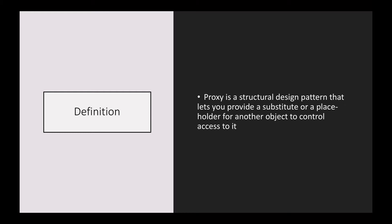The definition is quite simple, but the problem here is: why do you actually need a substitute or a placeholder for another object if you have the object itself? The reason we need a placeholder object for another object might be that the object you are trying to use is very heavy on system resources and it takes a lot of resources to create that particular object.